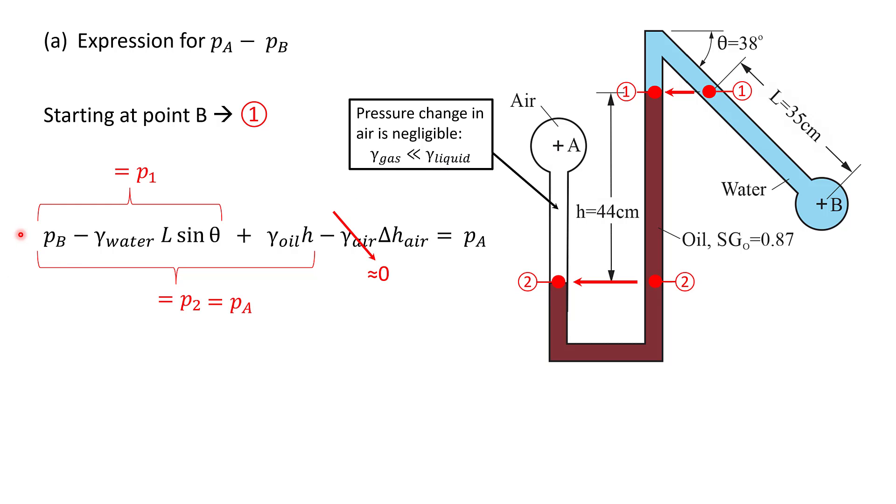Now we can solve this expression for pA minus pB. So rearranging, we get pA minus pB is the specific weight of oil times the height h minus the specific weight of water times l sine theta. And that's the solution to part a.